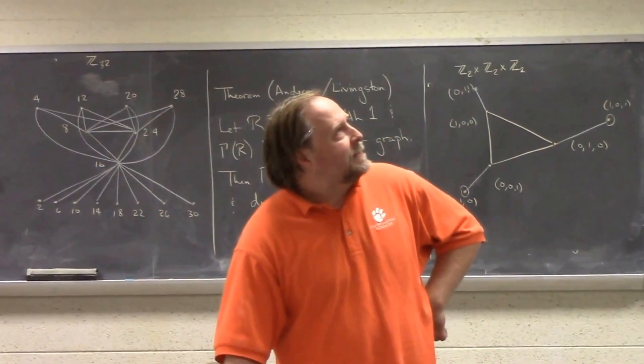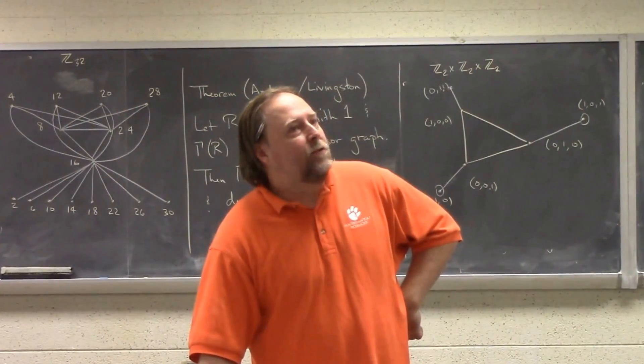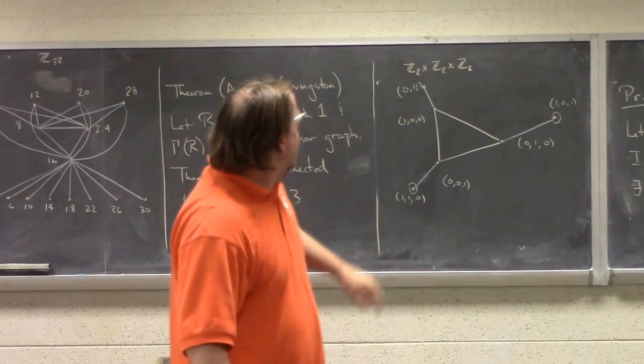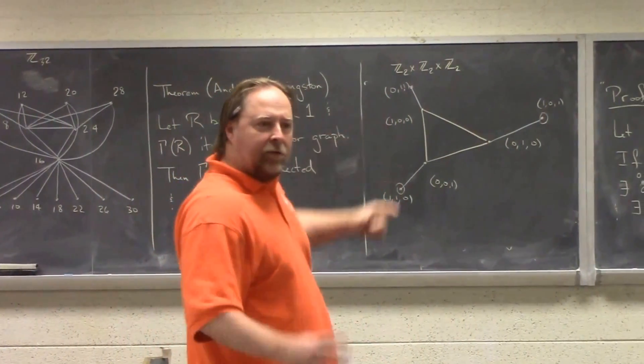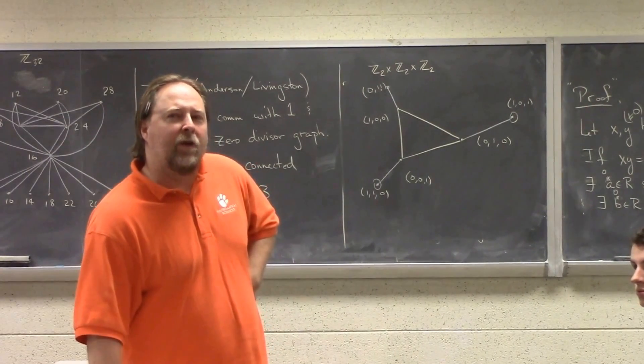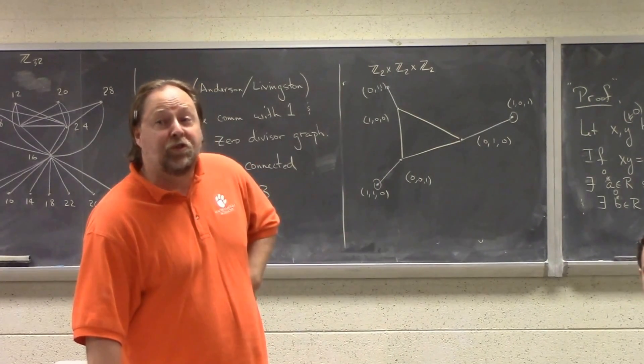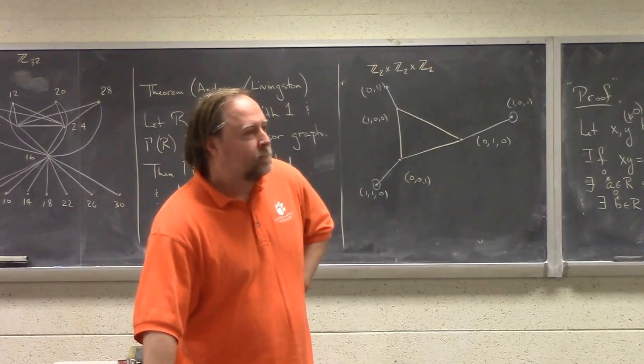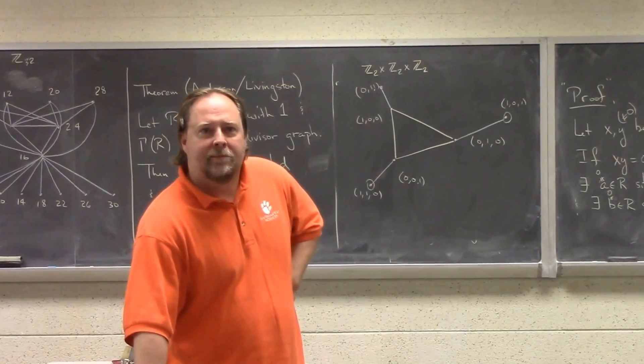In fact, I think that if you look at a Z mod N, right? So, just, you know, none of the Z2 cross Z2. If you look at just the Z mod N, I think that the zero divisor graph for those always has diameter less than or equal to 2. So, other questions?